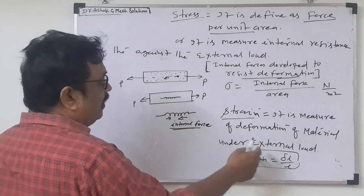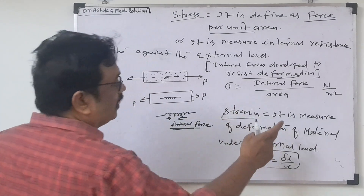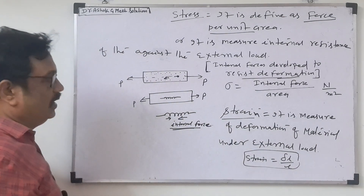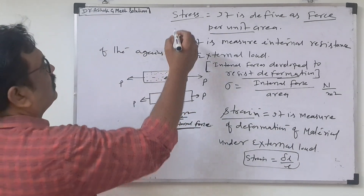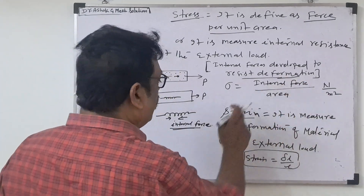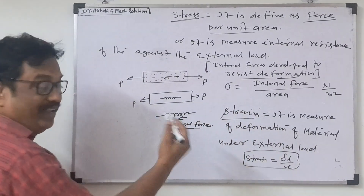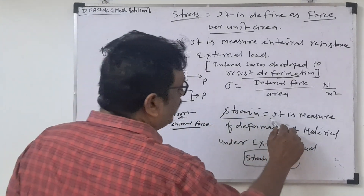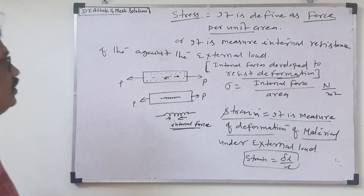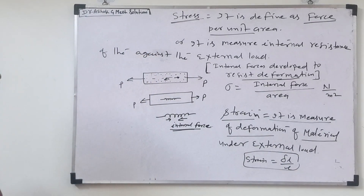To resist deformations, internal forces generate — that is called strength. How do we measure the strength? Strength we can measure by the deformations of the material. So the definition of strain is: change in length to the original length. That is the measure of deformation of the materials. That is why stress and strain are the major properties in strength of materials.